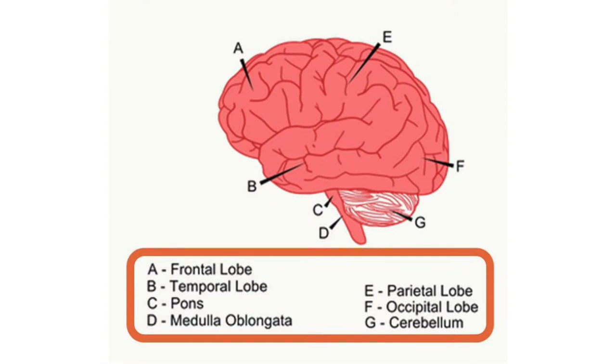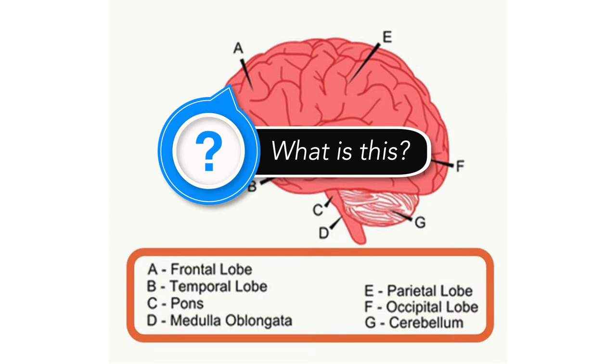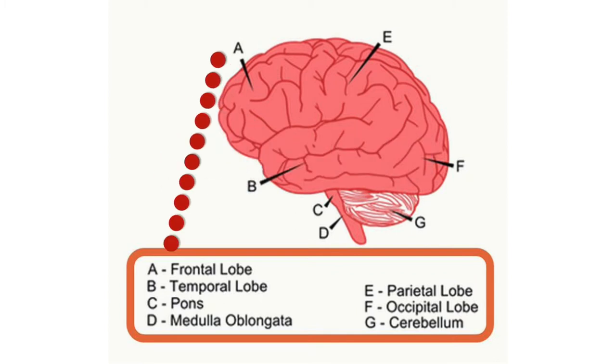We want things that relate together to be as close together as possible. Take this image of a brain, for example. It takes some mental effort to figure out which part of the brain corresponds to which label. We have to connect this letter up here to the legend all the way down here. Now we can see that this is the frontal lobe.